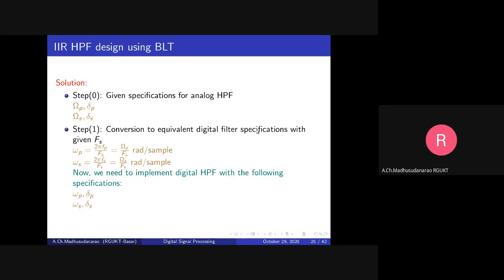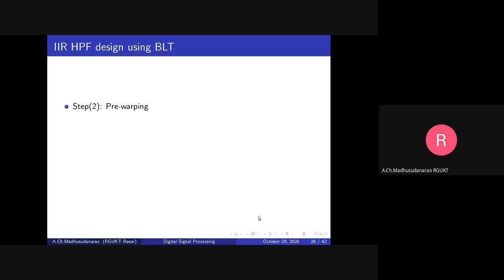First, in order to design a digital filter with these specifications, we will implement the analog filter using Butterworth filter design or similar analog filter design techniques. But for that we need to do pre-warping first. After that, we can simply apply bilinear transformation at the end. Once you have an analog filter H(s), you can simply replace s with (2/T) times (1 - z^(-1)) / (1 + z^(-1)).